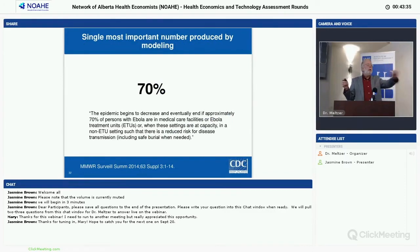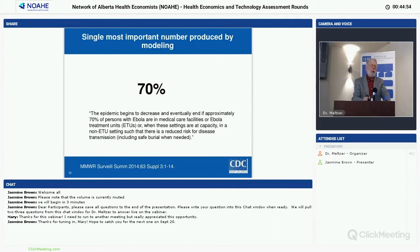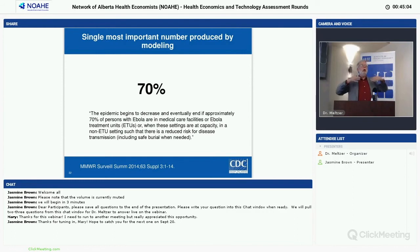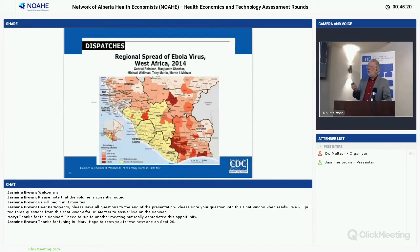The single most important number we gave was 70%: put 70% of all known cases either in Ebola treatment units, or — when those were filled — in safe home isolation with restricted access and prevented onward transmission. Get to that figure. That threshold resonated with public health workers and policymakers. And it worked.